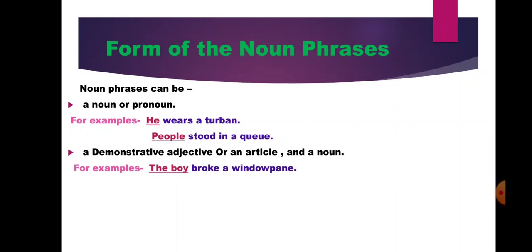For example: 'The boy broke a window pane.' The group of words 'the boy' — boy is a noun, the is an article — so 'the boy' is a noun phrase. Another example: 'Those boys are very naughty.' In this sentence, 'those boys' is a noun phrase. The word boys is a noun used as its head word, and those is a demonstrative adjective, so it's a noun phrase.